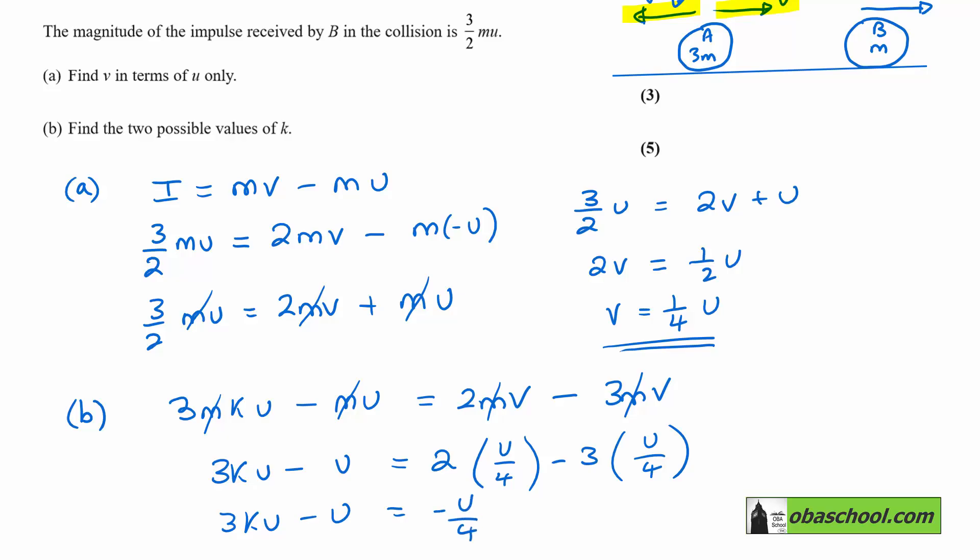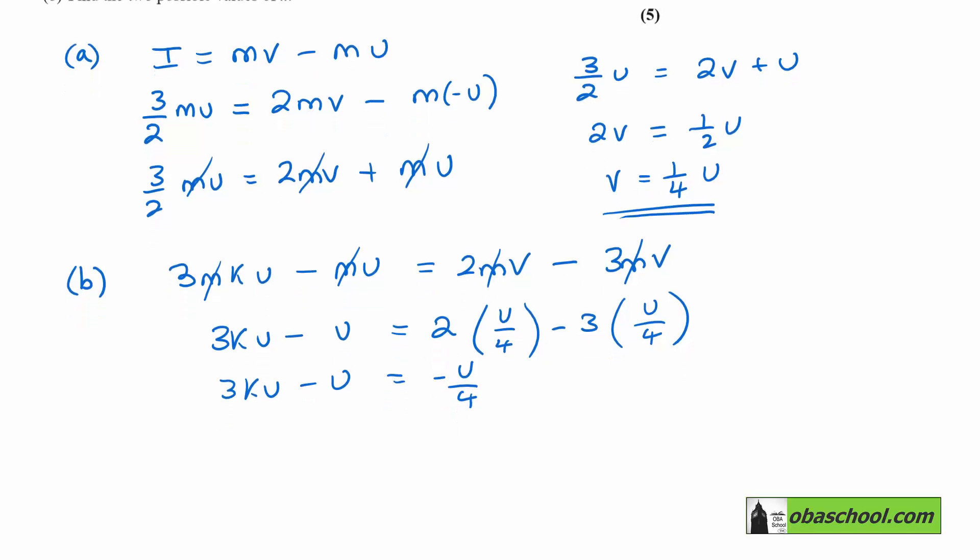So 3KU take away U equals negative U/4. That gives us 3KU equals U plus negative U/4—U take away U/4, which is 3U/4. Therefore we can cancel U's and we get K is 1/4.